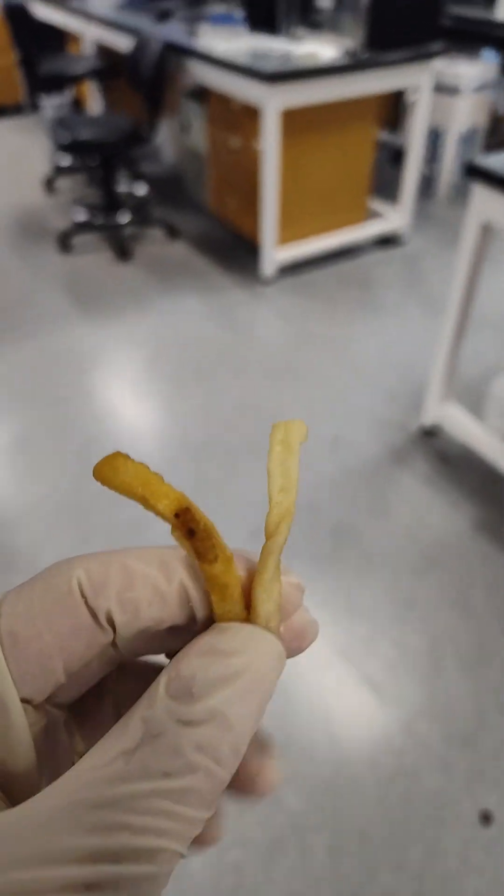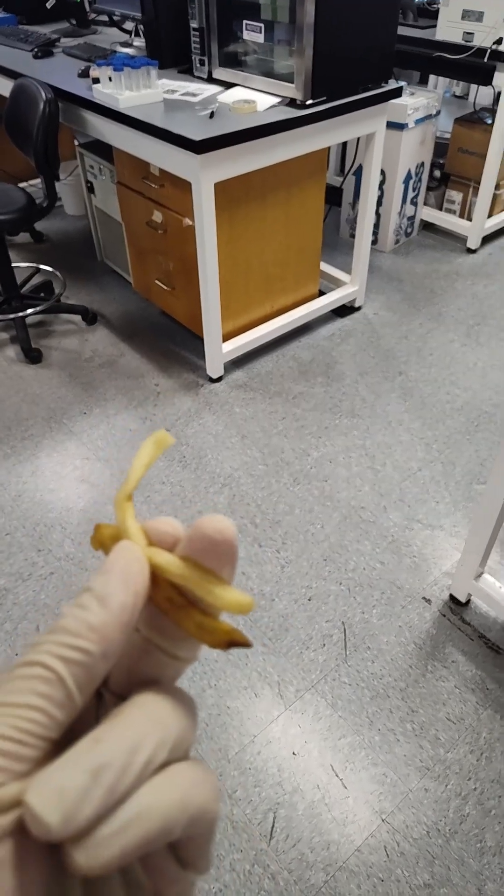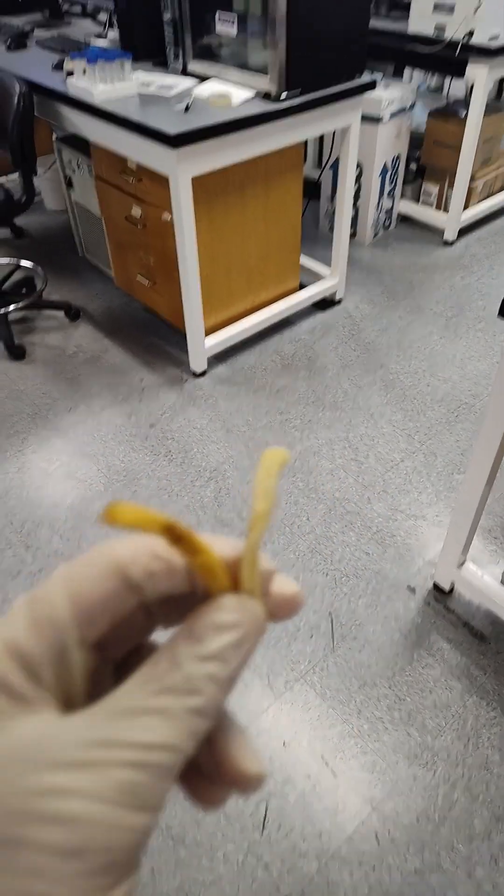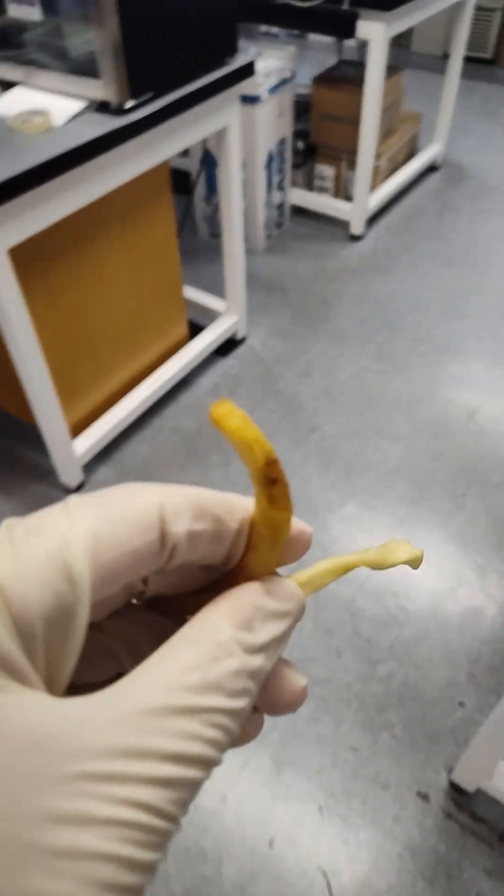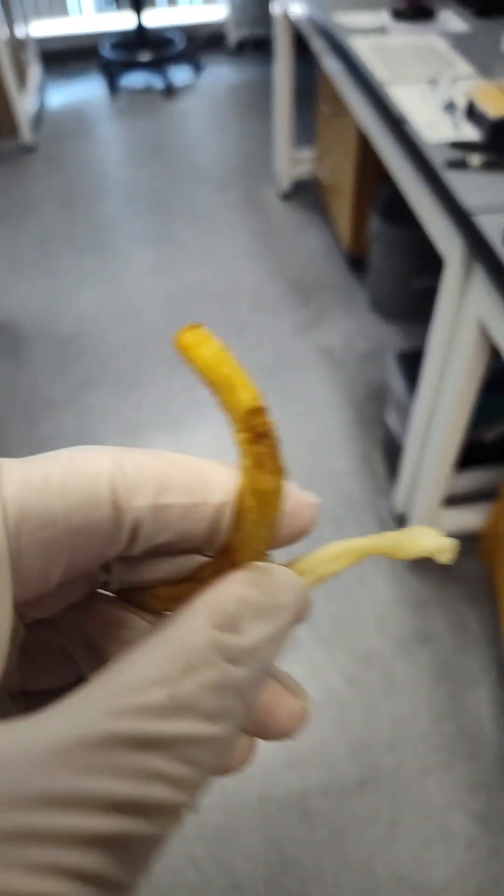We got Wendy's on the left and Mickey D's on the right. You almost never see a skin piece on the Mickey D's french fries. They're always so super clean and light, and they're always darker. Always darker these Wendy's fries.